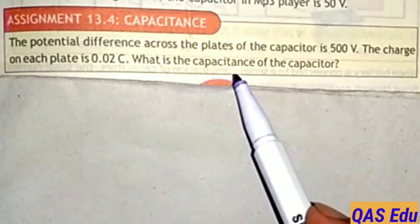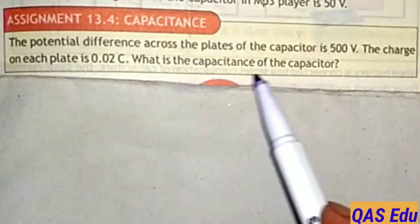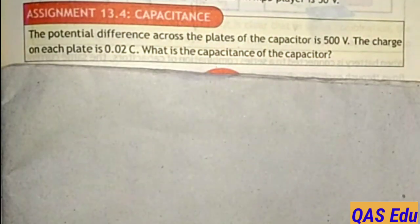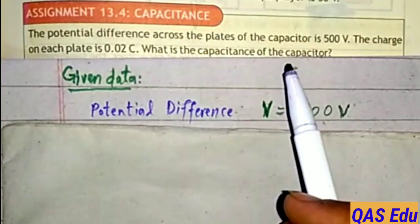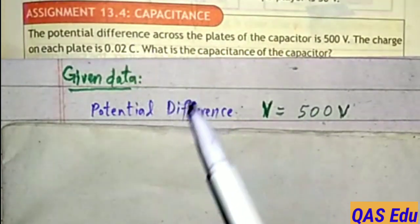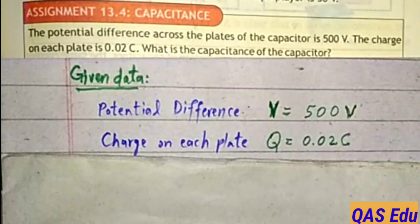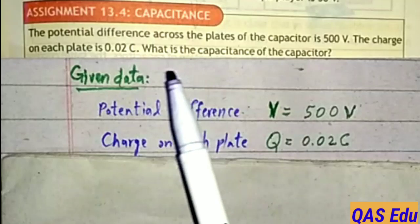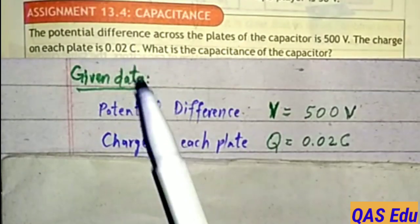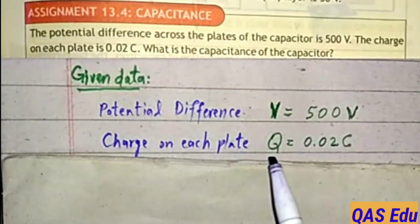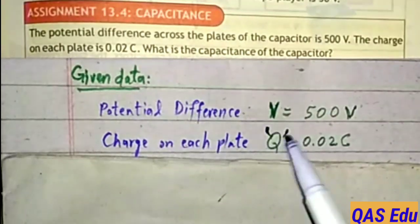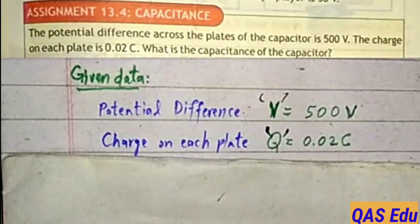The charge is 0.02 coulomb. Charge on each plate is 0.02 coulomb. And the required is capacitance C to find.